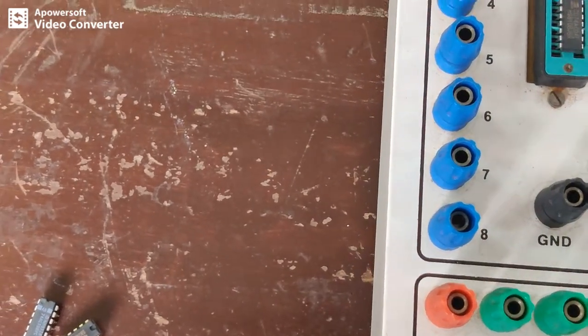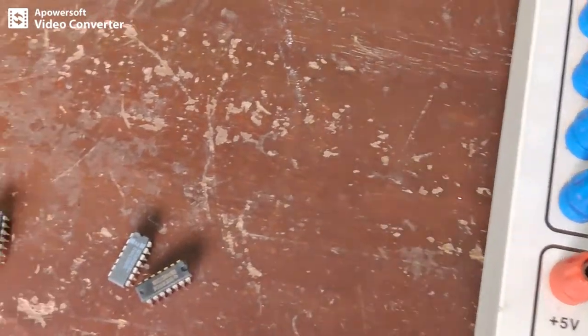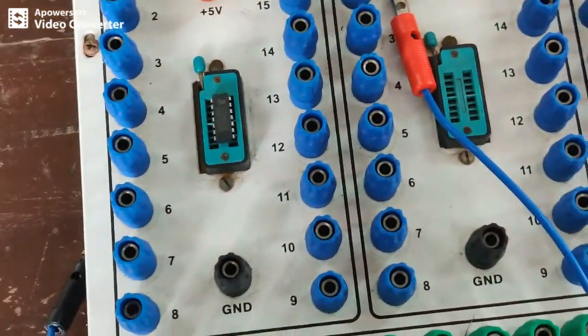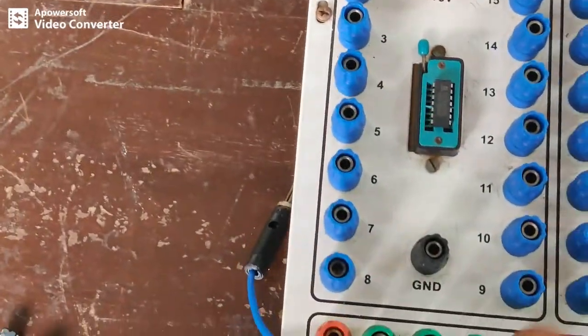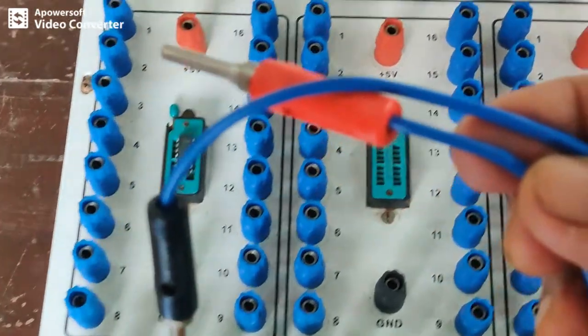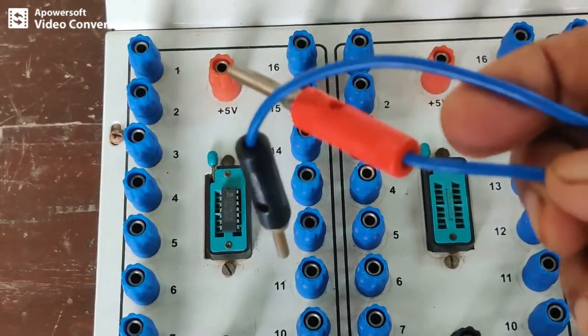Now we have to do the connectivity. To do the connectivity, this is called a patch cord. Normally this patch cord is nothing but a wire cable. This is used to connect the various pins of the IC.